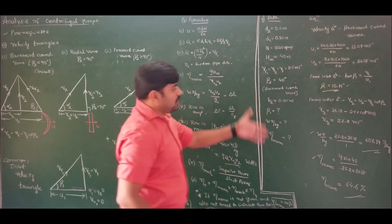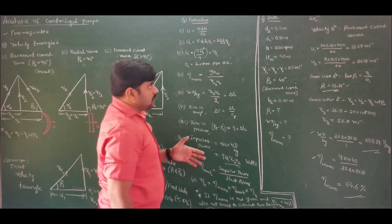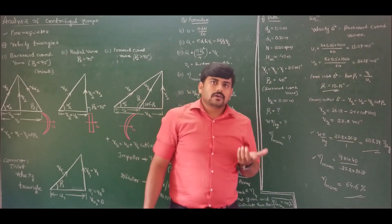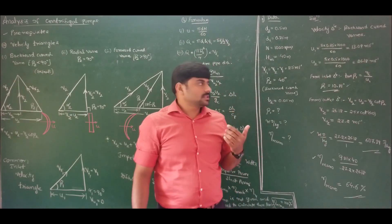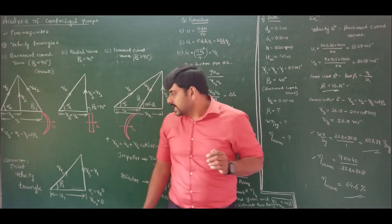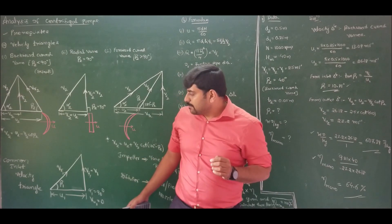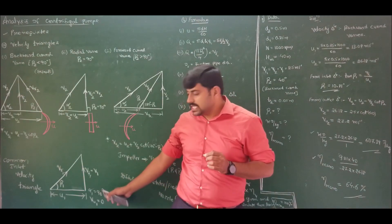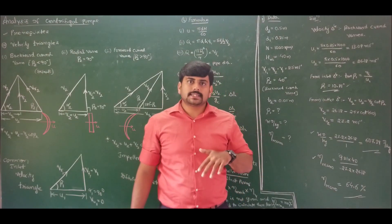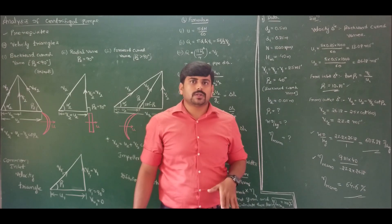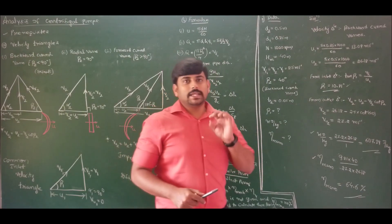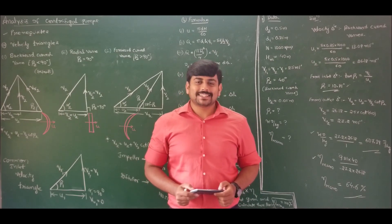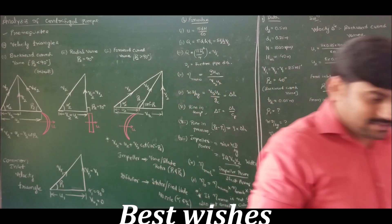So this is the solution for problem number 1. The problems and theory concepts of centrifugal pumps are very easy compared to other modules, because we are constraining the inlet velocity triangle of centrifugal pump to always be a right-angled triangle with alpha1 = 90 degrees. Hence problems are easier. So those are the prerequisites and the solution for problem number 1. That's all from this lecture. Thank you.